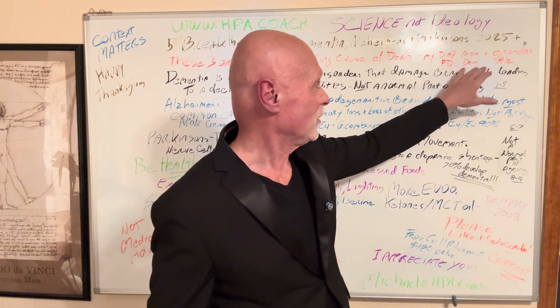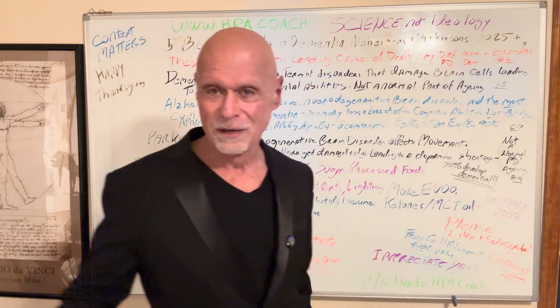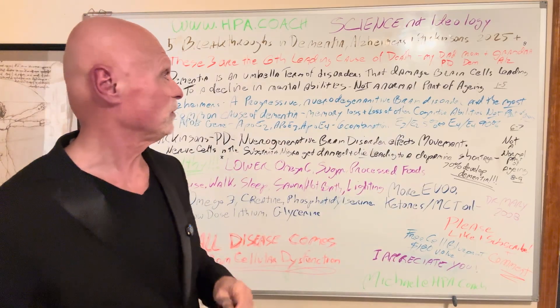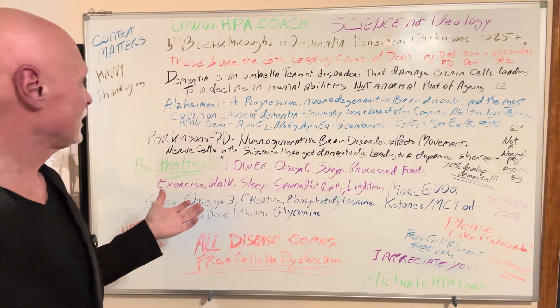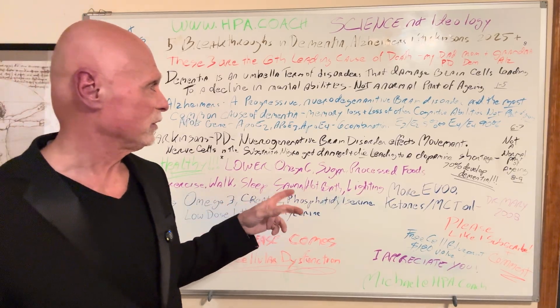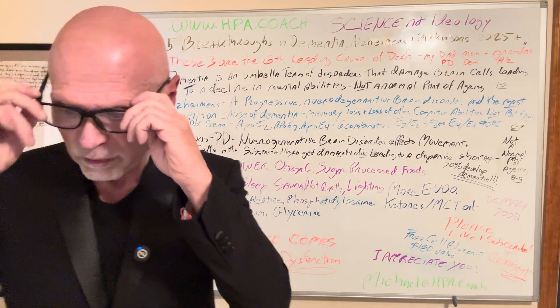My mom had dementia and her mom, my grandmother, had Alzheimer's. So this is something that affects me personally. Dementia is an umbrella term of disorders that damages brain cells, leading to a decline in mental abilities. It's not a normal part of aging.